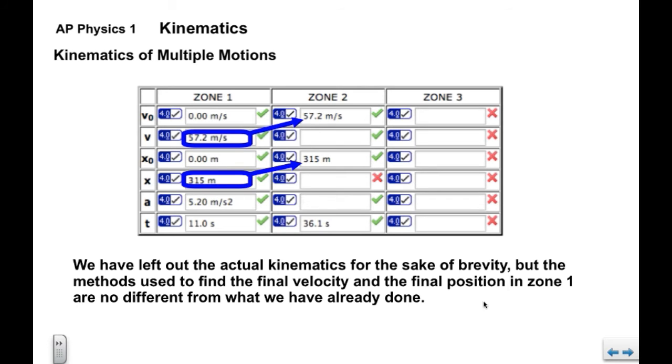Alright, so again we're going to leave out the actual solving of the problem. We know how to do these already. So we take this 57.2 meters per second, that goes into the initial velocity here. 315 meters, the final position, goes into the initial position for Zone 2. We also have the time interval.